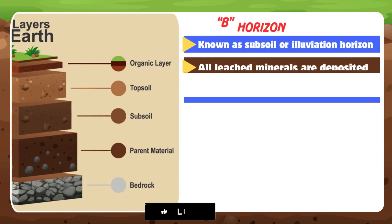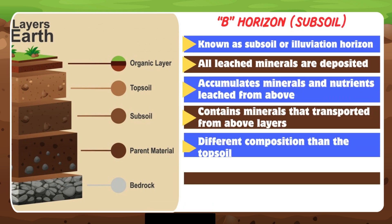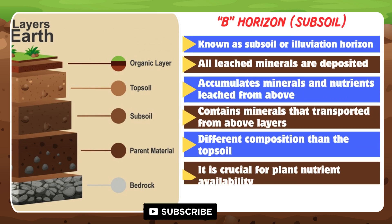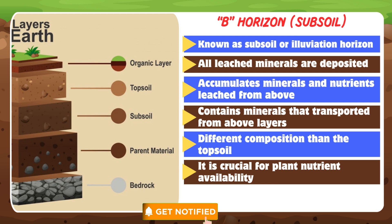B horizon — it is also known as the subsoil or illuviation horizon. This is the layer where all the leached minerals are deposited. It accumulates minerals and nutrients washed down from the above layers, often containing minerals transported from those layers, giving it a different composition than the topsoil. This layer is crucial for plant nutrient availability.